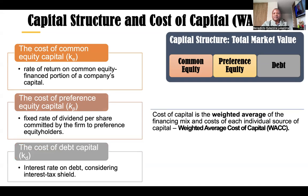Considering the different types of financing sources, the cost of capital is defined as the weighted average of the financing mix and the cost of each individual source of capital. So it is referred to as the weighted average cost of capital. Why is it weighted? Weight means the proportion of each of the financing sources — for example, what is the proportion of common equity value in the capital structure? What is the proportion of preference equity? And what is the proportion of debt? The proportion and the required rate of return combined together provide the weighted average, considering all the different types of funding.